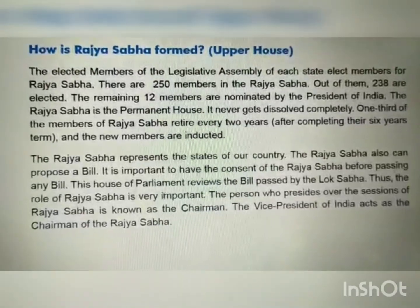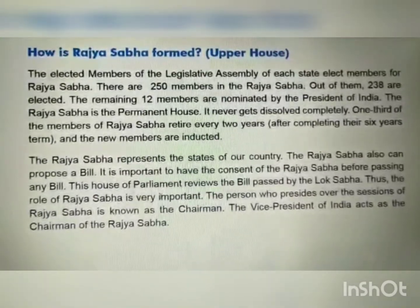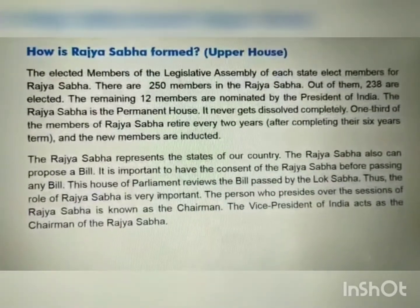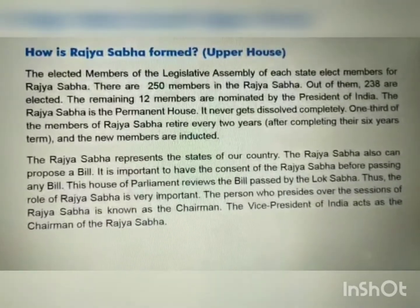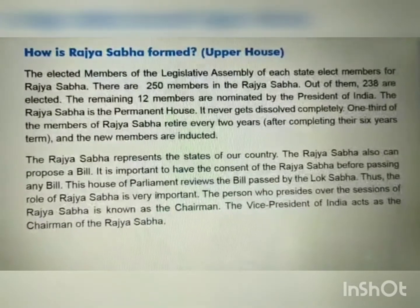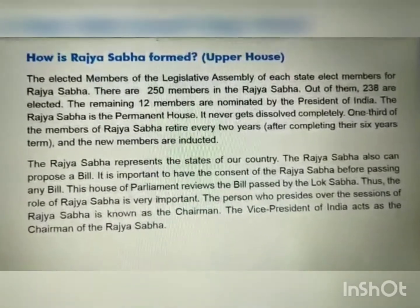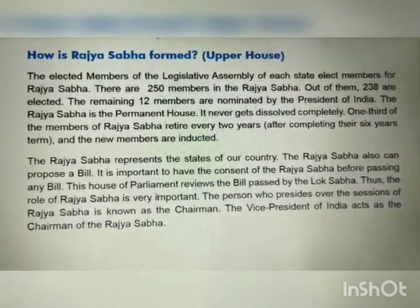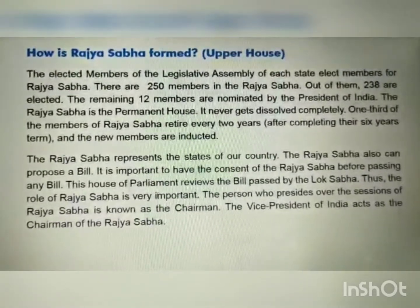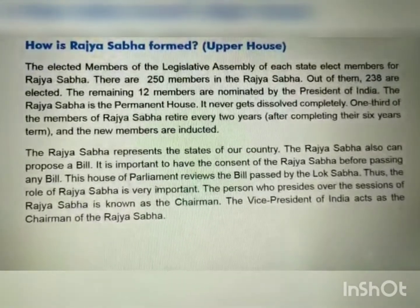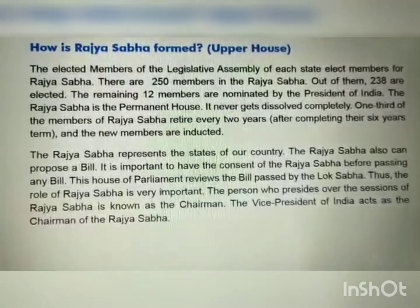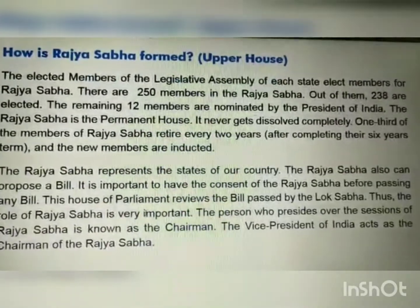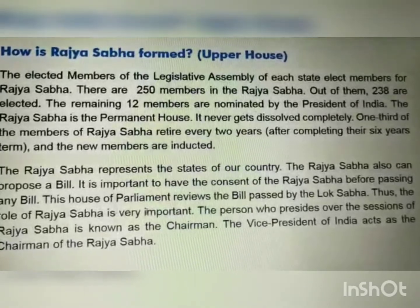The Rajya Sabha, or upper house, is formed by the elected members of the legislative assembly of each state, who elect members of Rajya Sabha. There are 250 members in Rajya Sabha — 238 are elected, and the remaining 12 are nominated by the President of India. The Rajya Sabha is the permanent house; it never gets dissolved completely. One-third of the members of Rajya Sabha retire every two years after completing their six-year term, and new members are inducted.